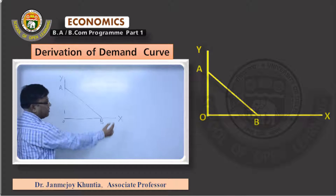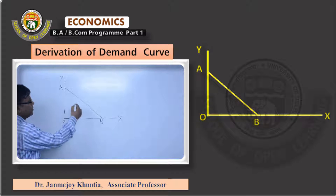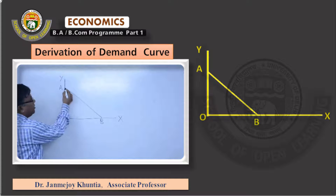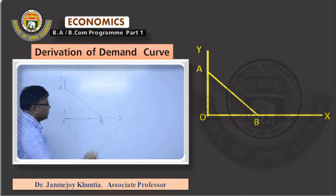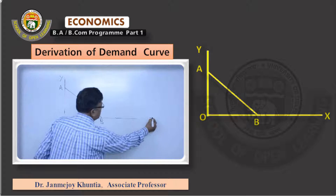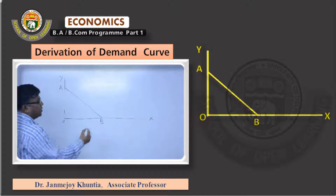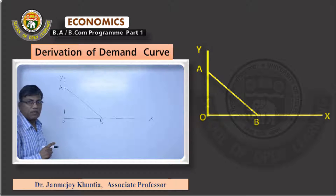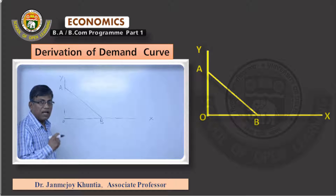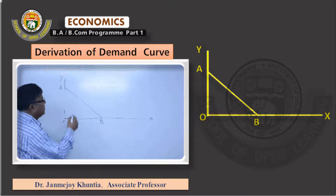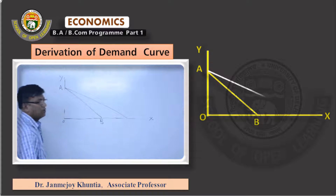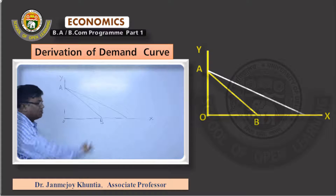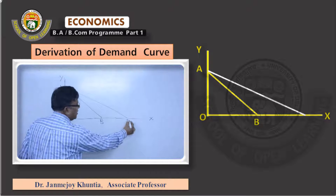When the price of good X falls, the budget line will move to the right keeping the intercept on the Y-axis constant. We will extend this a bit. Price of good X falls because we are going to derive the demand curve for good X. Once the price of good X falls, the budget line moves on the horizontal axis where good X is measured. Let us call the new budget line AB'.